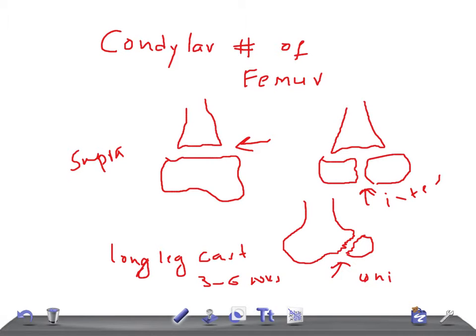For intercondylar fractures, the aim of treatment is to restore congruity of the articular surface as far as possible. Whether displaced in the T or Y pattern, open reduction and internal fixation is performed. Comminuted fractures are very difficult to reconstruct but can still be managed with open reduction and internal fixation. Once the acute period has subsided, knee mobilization should be started as early as possible.